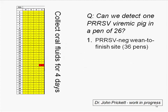The third study addressed limits of detection by PCR — attempting to answer the question: what's the probability of finding an early infection, specifically the first few pigs to turn viremic in a barn?